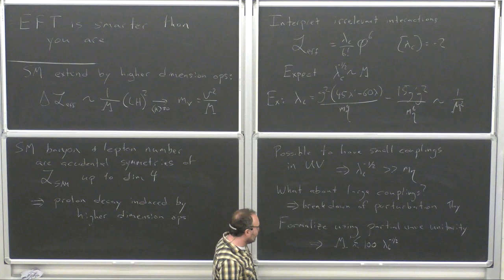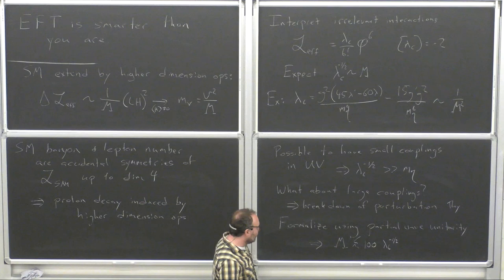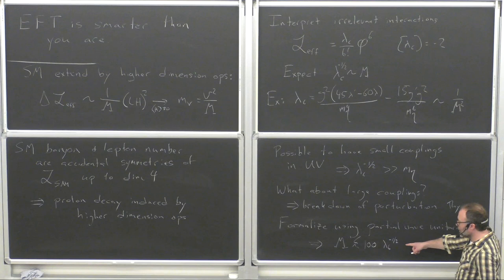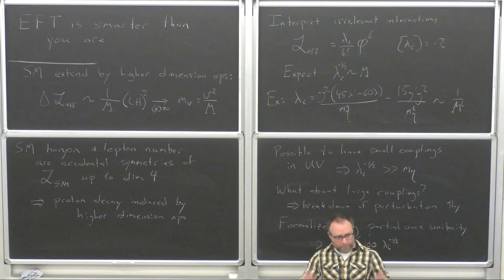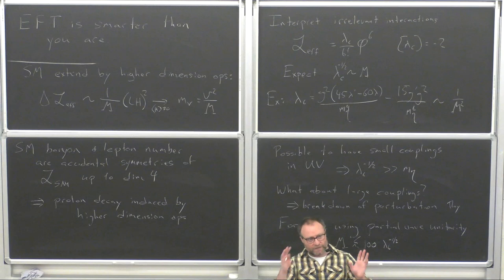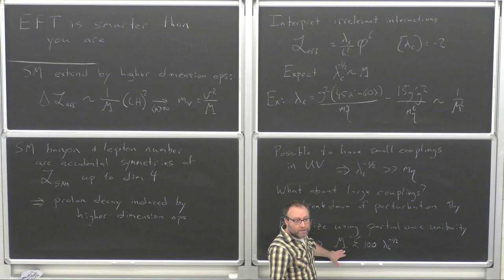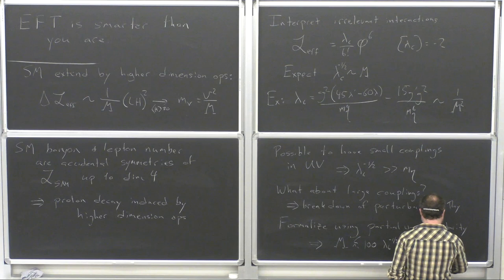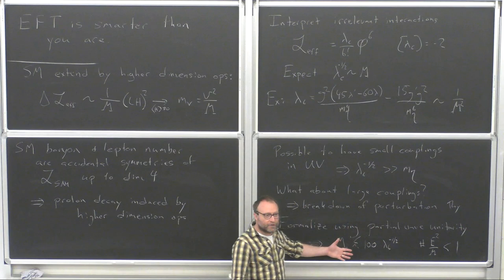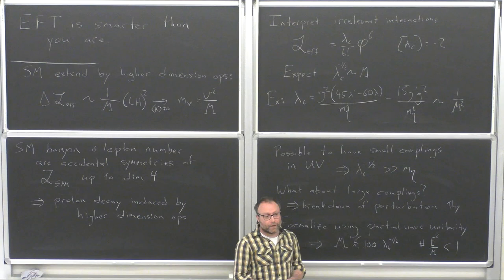Regarding the specific calculation: you would compute the two-to-four scattering amplitude, expand it in partial waves, and enforce that those partial waves are smaller than one. There are some factors of pi and two that you have to get right, but basically you enforce that each partial wave is smaller than one in the right units. That gives you something like some number times E squared over M squared less than one, and then you can solve for the energy where the theory breaks down.